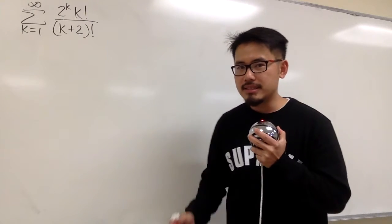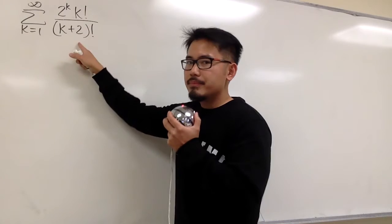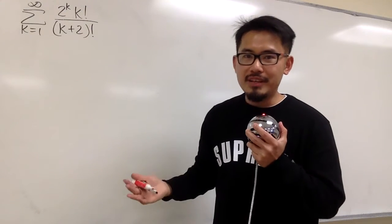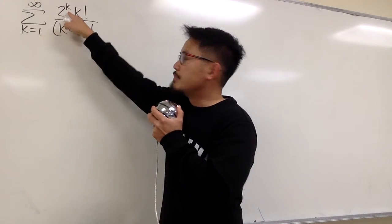Here is the thought process. We see that we have the factorials on the top and also on the bottom. This cannot even it out, right? But then, we have an extra 2 to the k's power on the top.